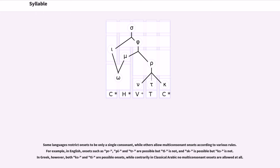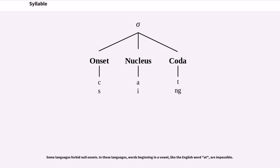Some languages restrict onsets to be only a single consonant, while others allow multi-consonant onsets according to various rules. For example, in English, onsets such as p-r, p-l and t-r are possible but t-l is not, and s-k is possible but k-s is not. In Greek, however, both k-s and t-l are possible onsets, while contrarily in classical Arabic no multi-consonant onsets are allowed at all.